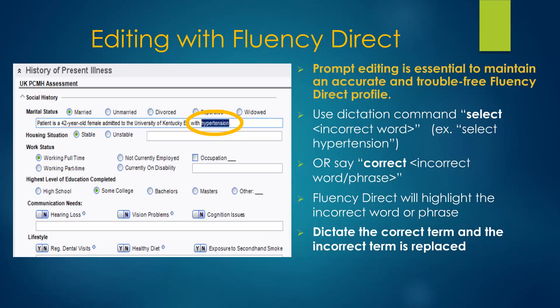Prompt editing is essential to maintaining an accurate and trouble-free Fluency Direct profile. Incorrect terms stored in your profile would become more difficult to correct during future use. There are several simple tools that make editing effortless. These tools can be utilized in the speech box and within EHR notes. The commands Select or Correct followed by something in your text will cause Fluency Direct to highlight those words in the transcription.